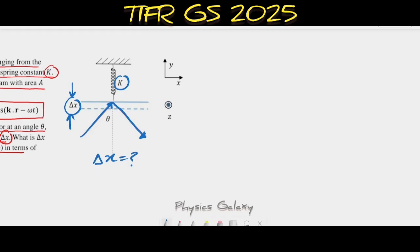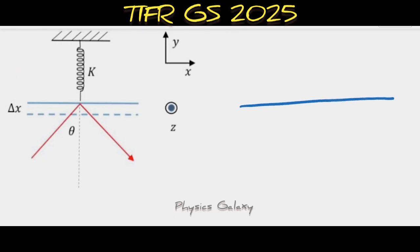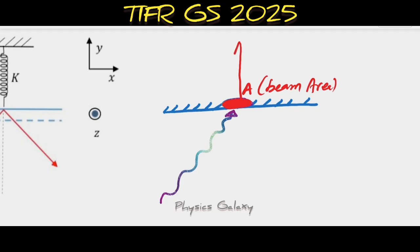Let's look at the arrangement. This is our mirror and a beam is incident. This is the light beam incident on area A. This beam area will exert pressure because we know light exerts pressure, but the component of pressure we are interested in is the upward pressure. Let's call this Pᵧ. We are only interested in the Pᵧ component of the pressure.